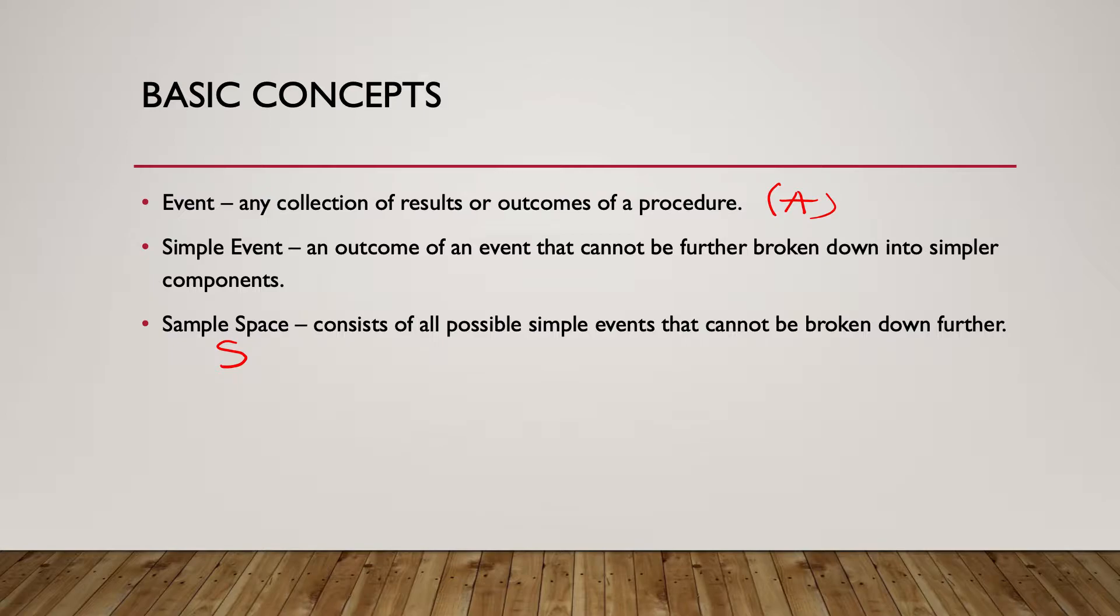First, an event is any collection of results or outcomes of a procedure and is denoted with a capital letter, such as capital A. A simple event is an outcome that cannot be further broken down into simpler components. The sample space consists of all possible simple events and is denoted by capital S and written out as a set.